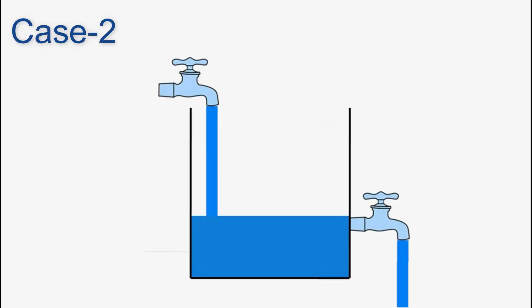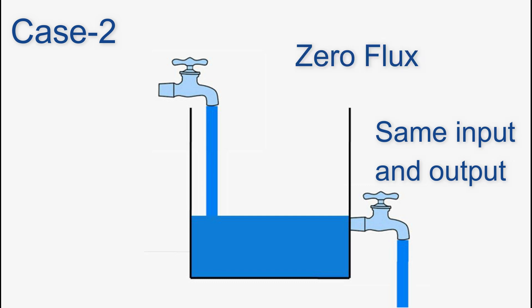Case 2. Consider a case when we get the same amount of water from the outlet as given from the inlet. In this case, we have zero flux. This means we have no extra source or sink inside the tank.